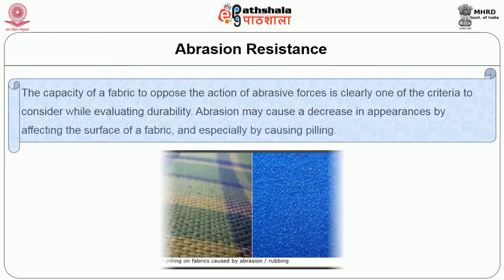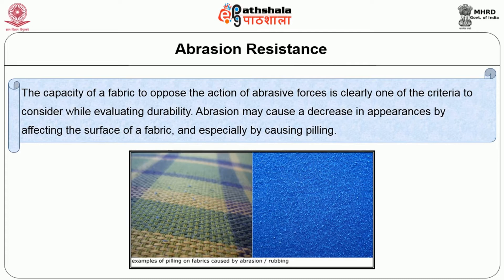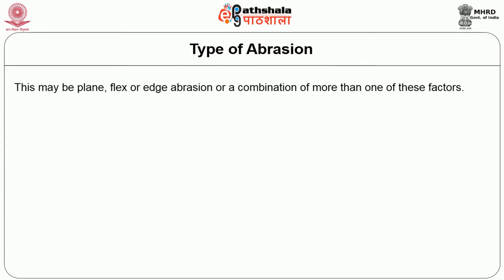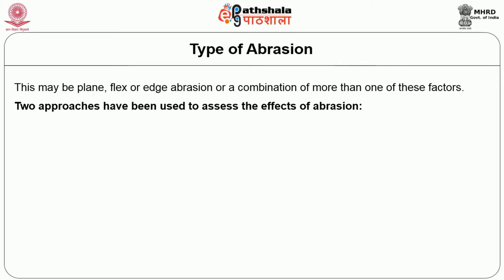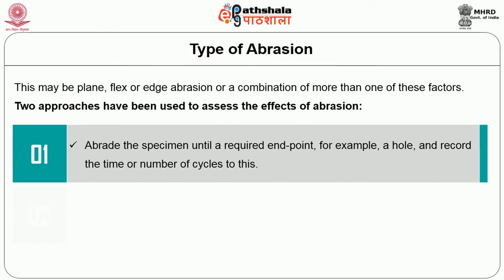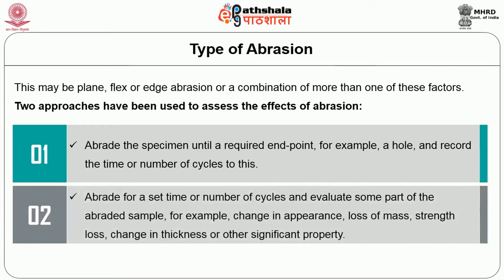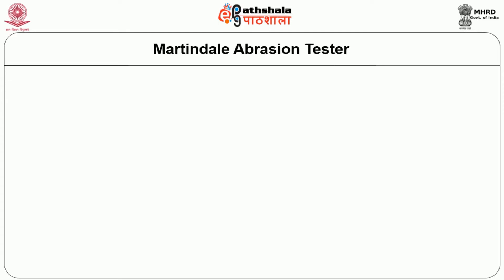Next is abrasion resistance. The capacity of a fabric to resist the action of abrasive forces is one of the criteria for evaluating the durability of the woven fabric. Abrasion may cause a decrease in appearance by affecting the surface, especially leading to pill formation. Types of abrasion include plain abrasion, flex, edge abrasion, or a combination of all the above. Two approaches are used to assess abrasion: first, abrade the specimen until a required end point such as a hole and record the time or number of cycles; second, abrade for a set time or number of cycles and evaluate properties such as change in appearance, weight loss, strength loss, or change in thickness. The instrument used to evaluate abrasion resistance is the Martindale abrasion tester.